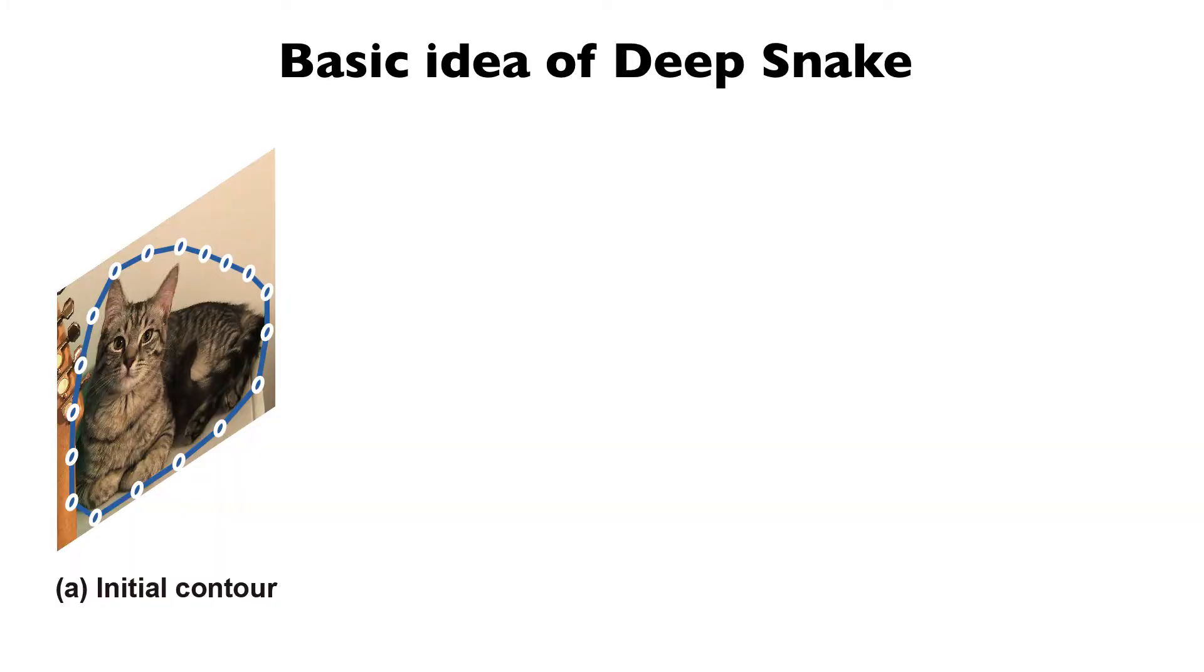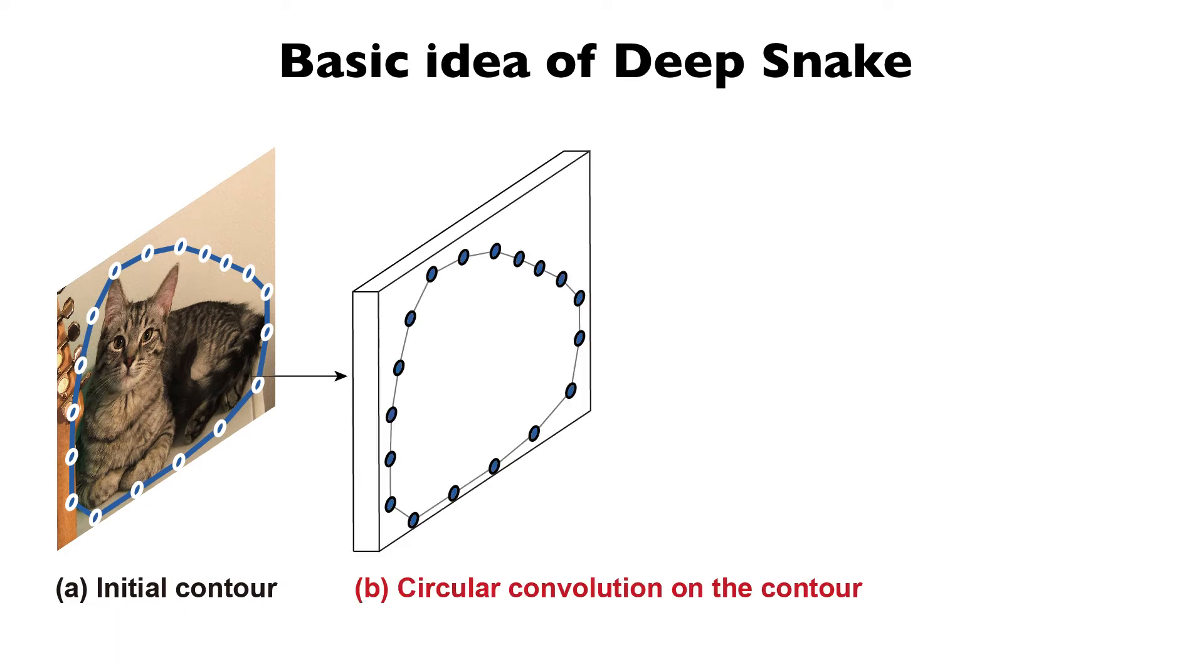Assume an initial contour around the cat is given. We first use a convolutional neural network to produce a feature map and then extract feature vectors for each contour node, which construct features defined on the contour.